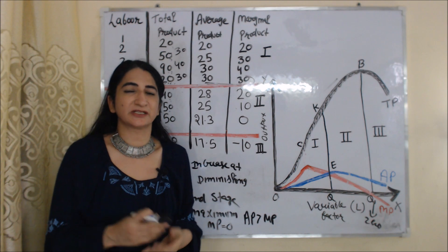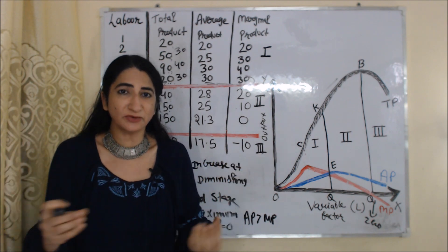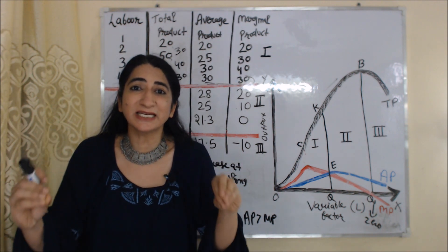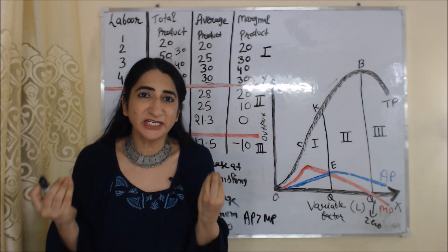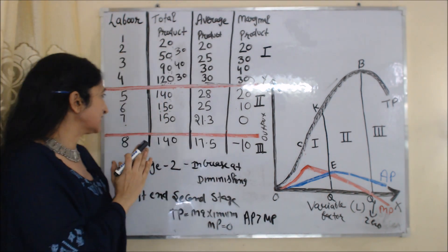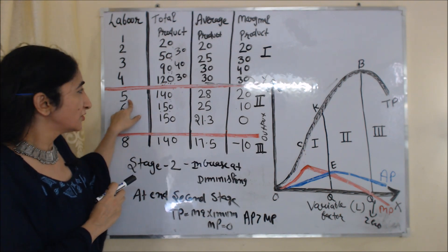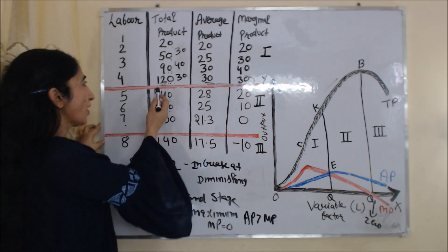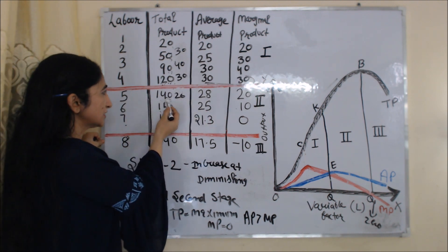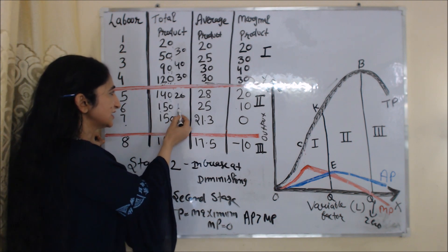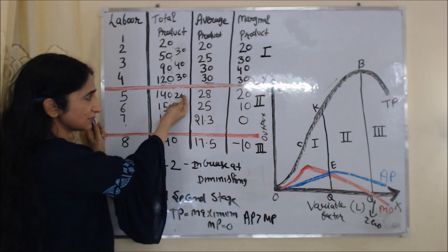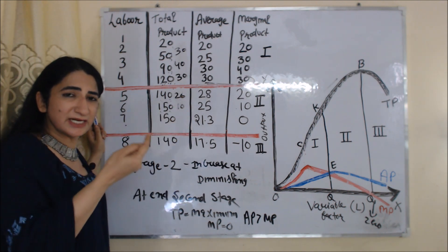Now for the second stage. First: during the second stage, TP increases at a diminishing rate. The second stage starts from the 5th labor. TP increases from 120 to 140, an increase of 20 units. Then TP increases from 140 to 150, an increase of 10. So TP is increasing at a diminishing rate — first by 20, then by 10.